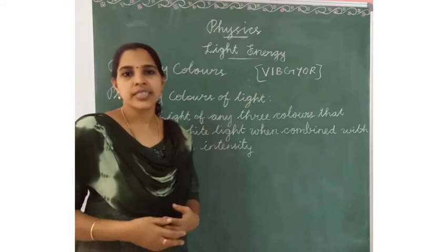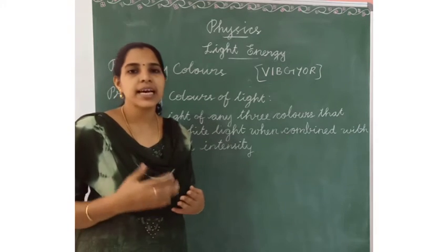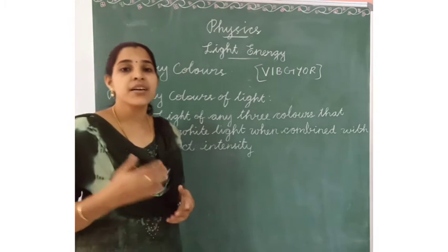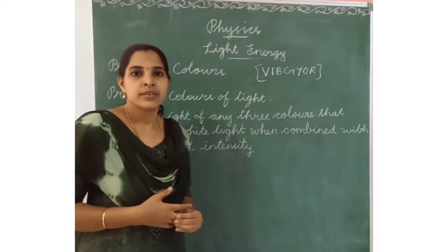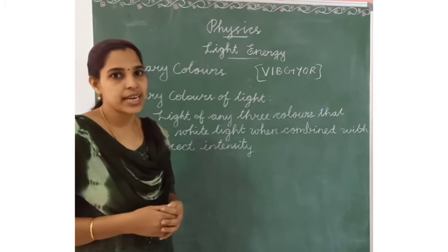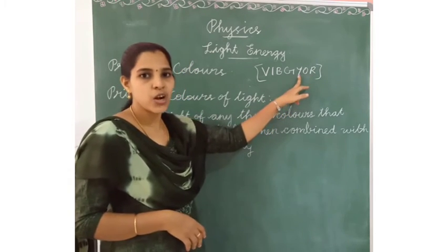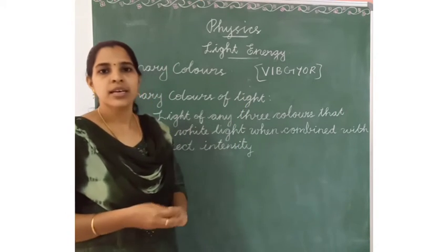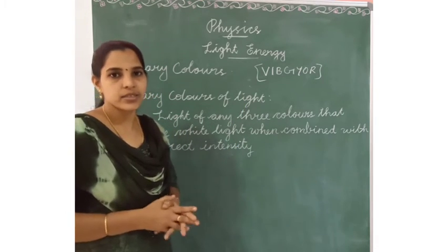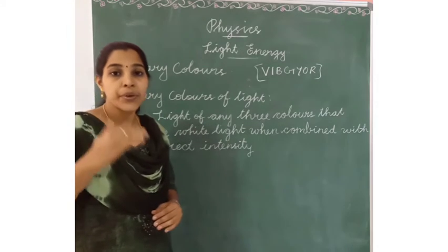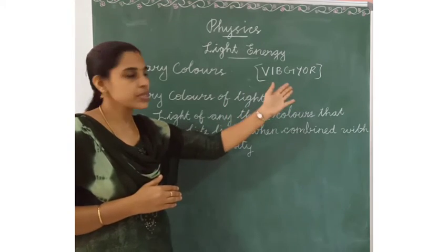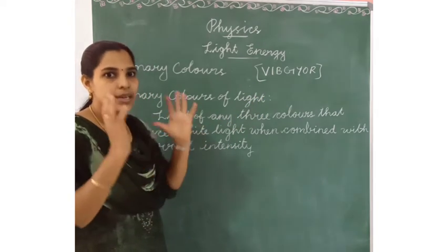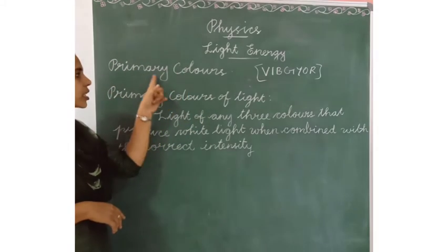When we see white light from a torch or sunlight, we can only see white. But sunlight actually has seven colors. When a rainbow appears, we can see the seven colors: red, orange, yellow, green, blue, indigo, and violet. These seven colors are present in sunlight, and we only see them during the rainy season when a rainbow appears. These are called the primary colors.